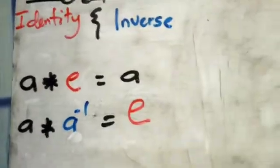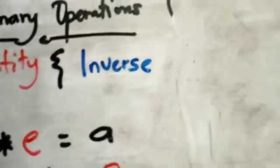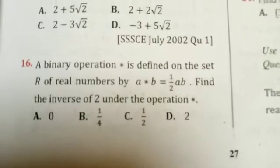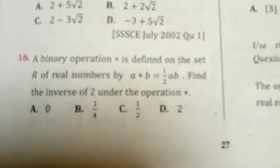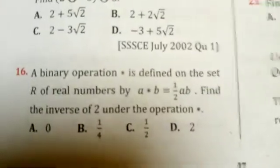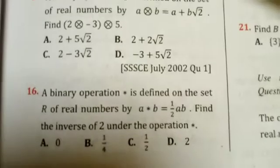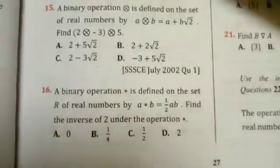Let's solve a past exam question to see exactly how to apply this. The question says: a binary operation star is defined on the set of real numbers, where the first person star the second person equals one-half multiplied by the first person multiplied by the second person.